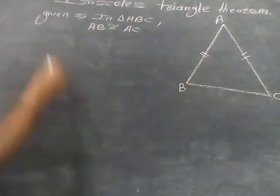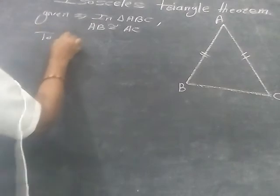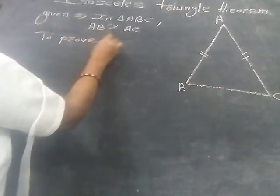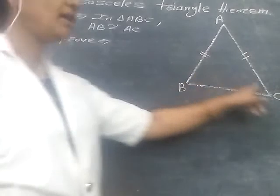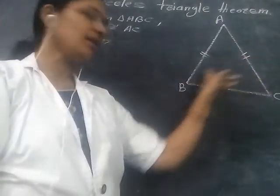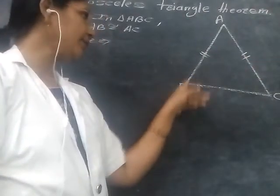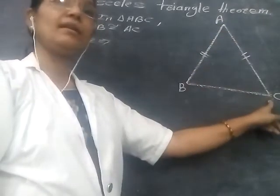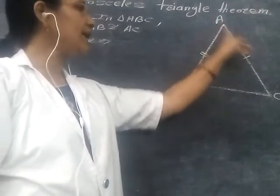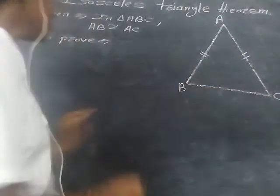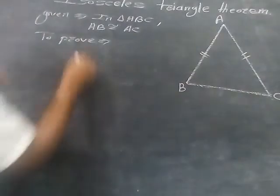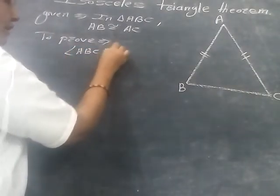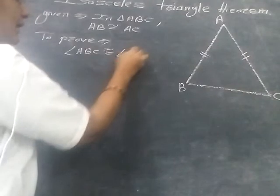Now we have to prove that the angles opposite to these sides are congruent. The angles opposite to these sides are congruent. That means we have to prove that angle ABC is congruent to angle ACB. So we write here: angle ABC is congruent to angle ACB — that is what we have to prove.